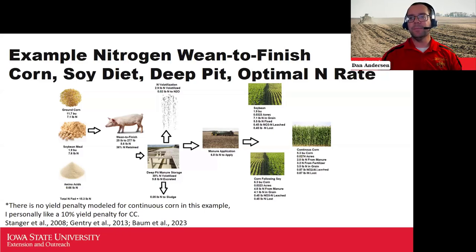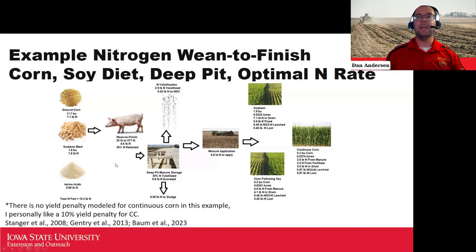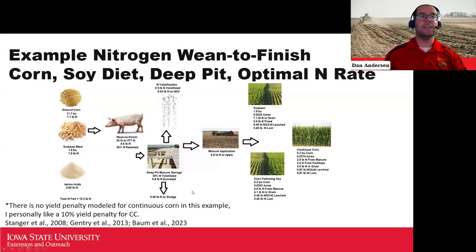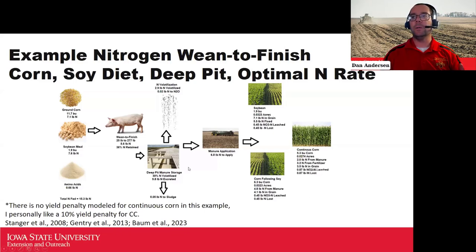I wanted to look at where nutrients start and where they flow. My cropping acres at the back end are tied to supplying the feedstuffs I need — enough corn acres to supply all my corn, enough soybean acres to supply all my soybean meal. Based on the diet formulated, we estimated feeding about 15 pounds of nitrogen to raise a pig from 25 to almost 280 pounds. That pig retains a little more than 5.5 pounds — about 36% of the nitrogen fed. The rest gets excreted into that pit, and we lose about 30% of the nitrogen from excretion to land application, partitioned into ammonia and direct and indirect N₂O emissions — drawn as an arrow going up into the air. That means of all the excreted nitrogen, I get almost 7 pounds to put back onto my crop.